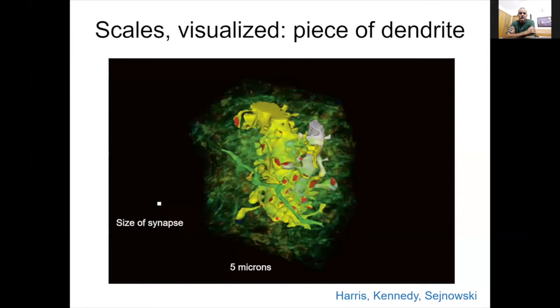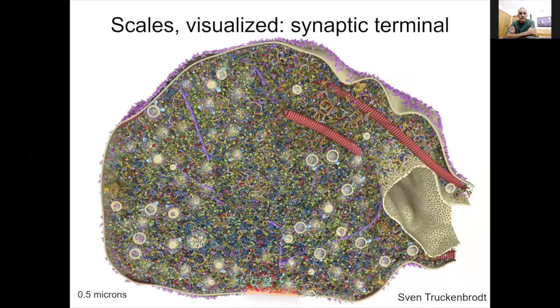Another hundred fold magnification. And this is a lovely EM study by Kristen Harris and collaborators. Here you're seeing in yellow a small region of dendrite and the little red spots that you see on it are individual synapses. It's an incredibly densely packed piece of tissue. Now let's zoom in another time to the size of a single synapse.